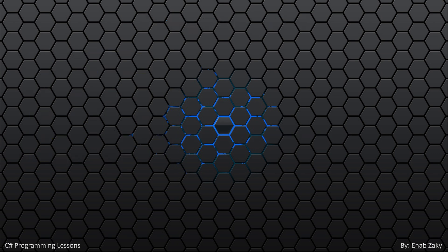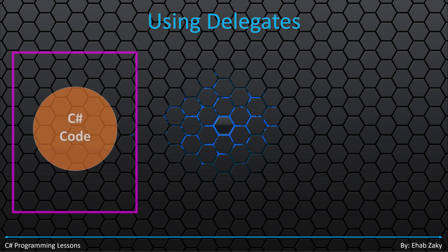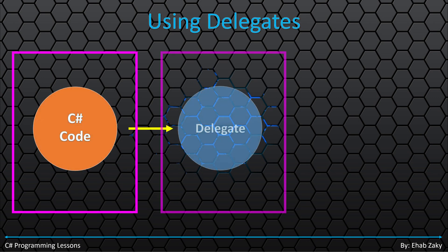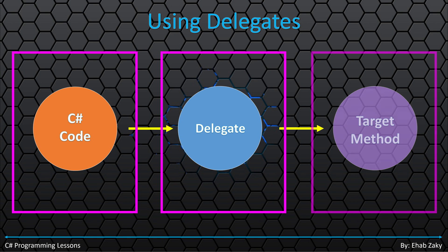Delegates are a special type that can be used to call a method indirectly. When you call a method in C-Sharp, you simply type its name followed by its parameters, or empty brackets if it has none. This is the direct call — you call the method yourself. You can alternatively leave this job for a delegate: create a delegate object, then tell it about a method you need to call, and later ask it to call it for you.